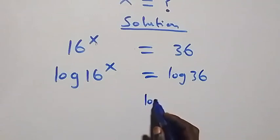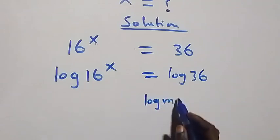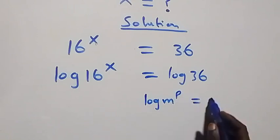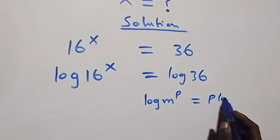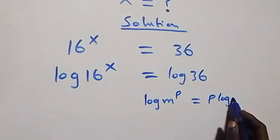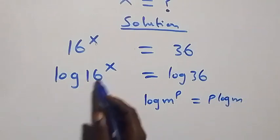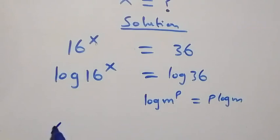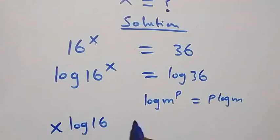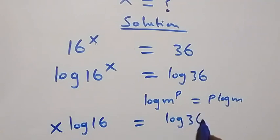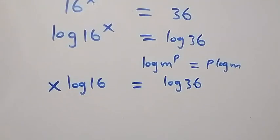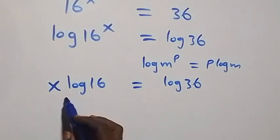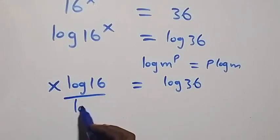We apply the power law of log, from log m raised to power p which can be written as p log m. Here the power is x, and we have x log 16 equals to log 36.